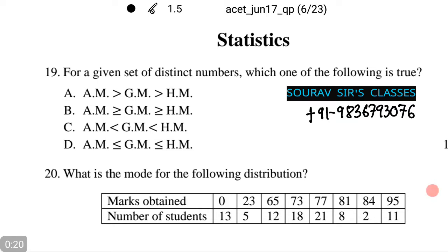Now, let us see what the first question asks of us. For a given set of distinct numbers, which of the following is true? AM is greater than GM, HM, or the other portions. Let us see how to figure this out.